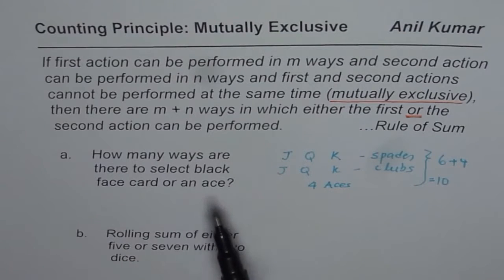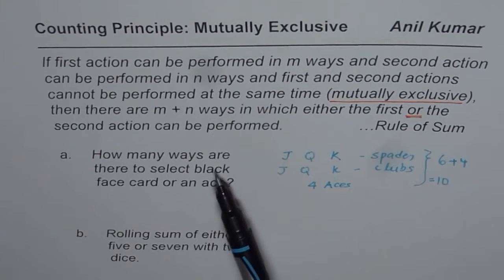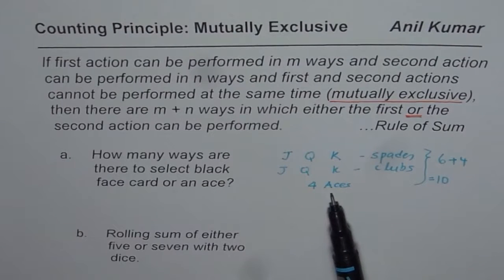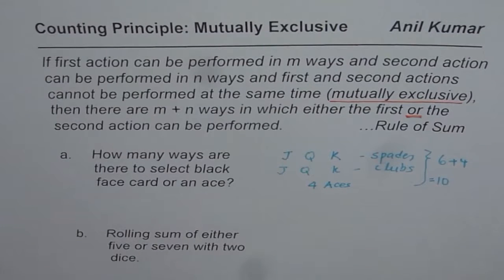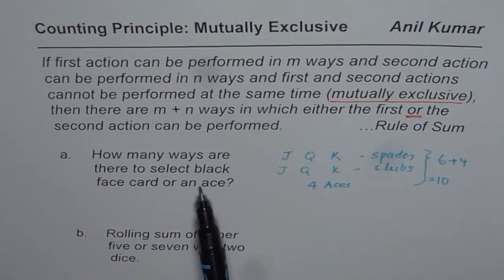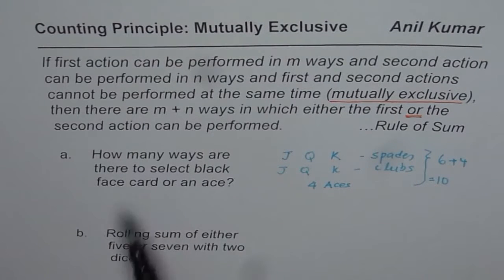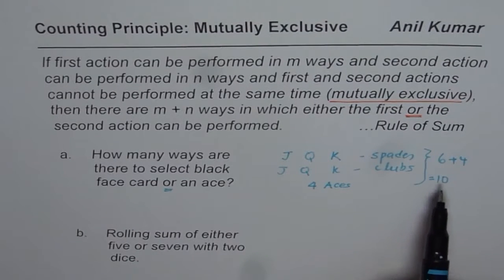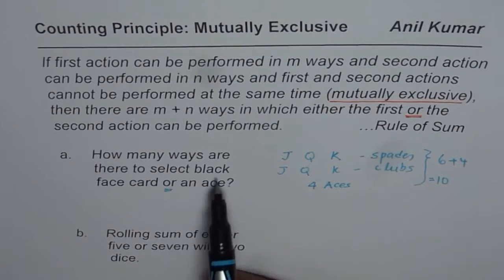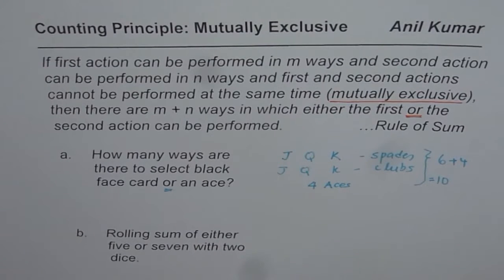Are these events mutually exclusive? Well, if you draw a face card, you cannot draw an ace — it is either a face card or an ace. Therefore, these two events are mutually exclusive. When you say the total number of ways for either this or that operation, the keyword is 'or', so we just add them up. There are six black face cards and four aces, so the total number of ways is six plus four, which is ten.